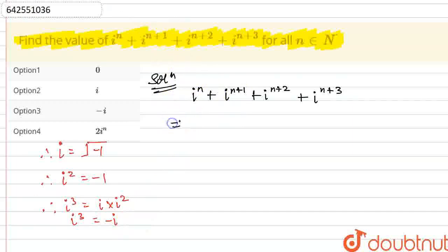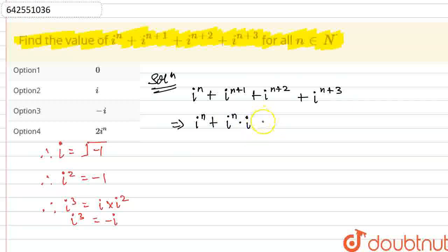What I can do is write this as iota raised to the power n, plus — this can be written as iota raised to the power n into iota — using the properties of exponentials. We know that if we have a raised to the power m+n, then this can be written as a raised to the power m, into a raised to the power n.